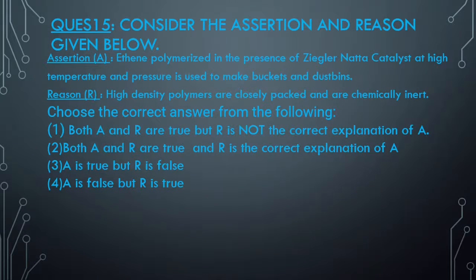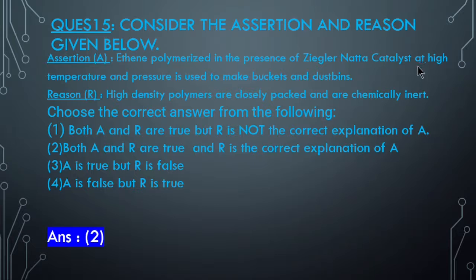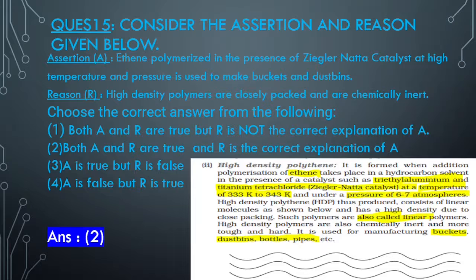Question 16: Assertion-Reason type for HDPE. The answer is option 2 - both are true and the reason is the correct explanation. Ethene polymerized in the presence of Ziegler-Natta catalyst at high temperature and pressure is used to make buckets and dustbins. High density polymer chains are closely packed and chemically inert. The important catalyst is triethyl aluminium and titanium tetrachloride.